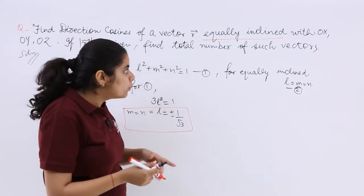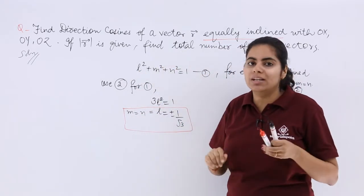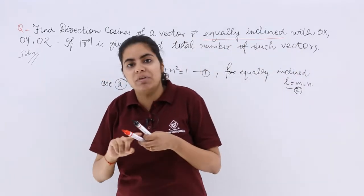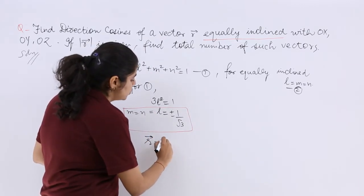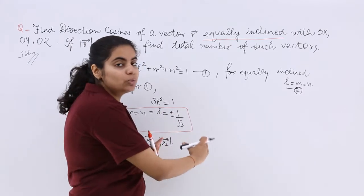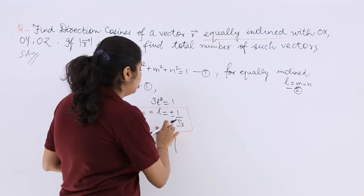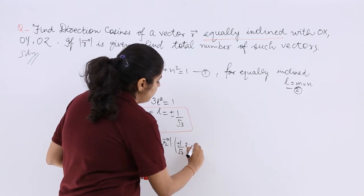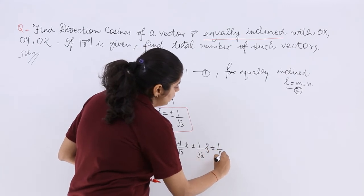But is this the final answer? No, because not only direction cosines were needed — we also need to find out the total number of vectors. Given is mod R, and you have to find out direction cosines of this vector R. A vector is composed of its modulus multiplied by a unit vector. So the unit vector will be ±1/√3 î ± 1/√3 ĵ ± 1/√3 k̂.